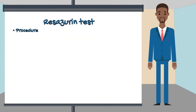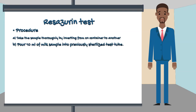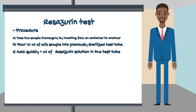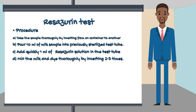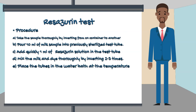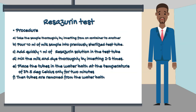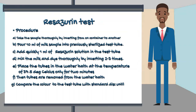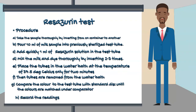Procedure for Resazurin test: Mix the sample thoroughly by inverting from one container to another. Pour 10 ml of milk sample into a previously sterilized test tube. Add quickly 1 ml of Resazurin solution and mix the milk and dye thoroughly by inverting 2–3 times. Place the tubes in a water bath at 37.5 degrees Celsius for 2 minutes. Remove the tubes, compare the color with the standard disk until colors are matched, and record the readings.